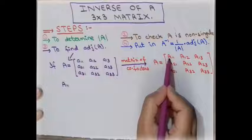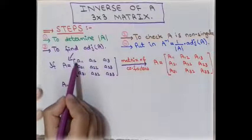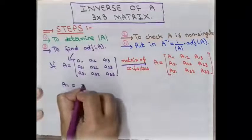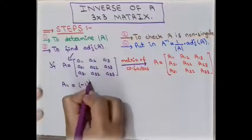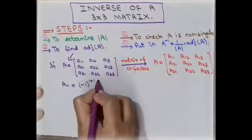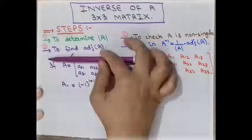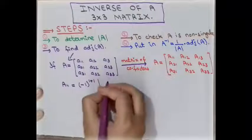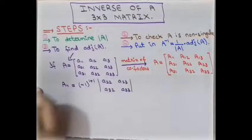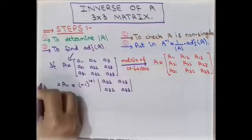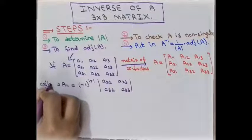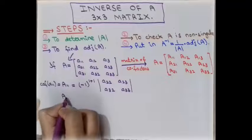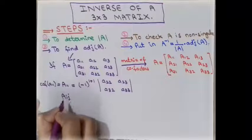To calculate the co-factor A11, we have the formula: (-1)^(1+1) multiplied by the determinant of the remaining elements after removing the row and column corresponding to that element. We are left with four elements, which gives us the minor. This is also called the co-factor of element A11.